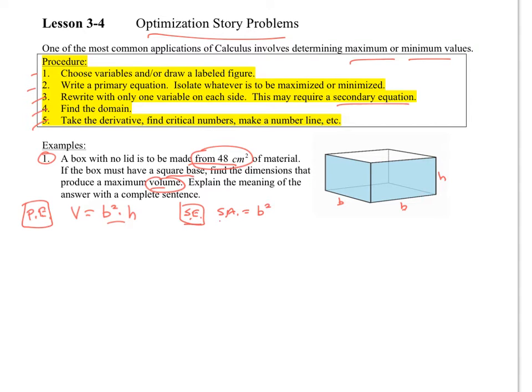So my secondary equation is going to be for surface area. If I take the area of the bottom of my figure, that would be b². Then I take each side. Notice that this is just b times h. That's the area of each one of those faces. I have four faces going around. So that would be my equation: SA = b² + 4bh. They tell us that it's 48 square centimeters.